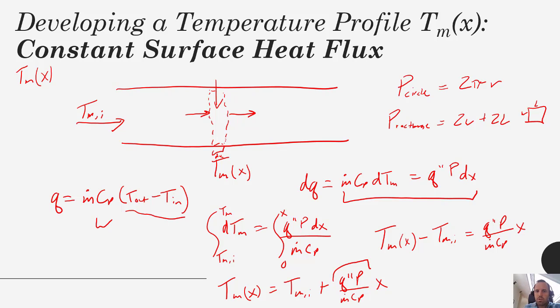This makes sense intuitively. You have your temperature coming in versus x, and if you're just adding a constant amount of heat per unit area, which is the constant flux, then it makes sense that your temperature would just increase linearly.